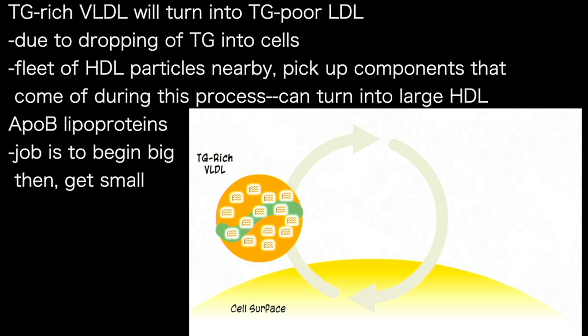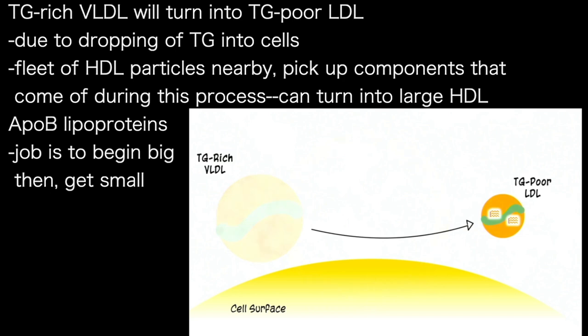First, the VLDL that's rich in triglycerides is going to turn into a triglyceride-poor LDL. Why is it going from something large to something small? Well, it's because it's dropping off its cargo — it's dropping off those triglycerides into the cell. This is accomplished through different enzymatic activities.